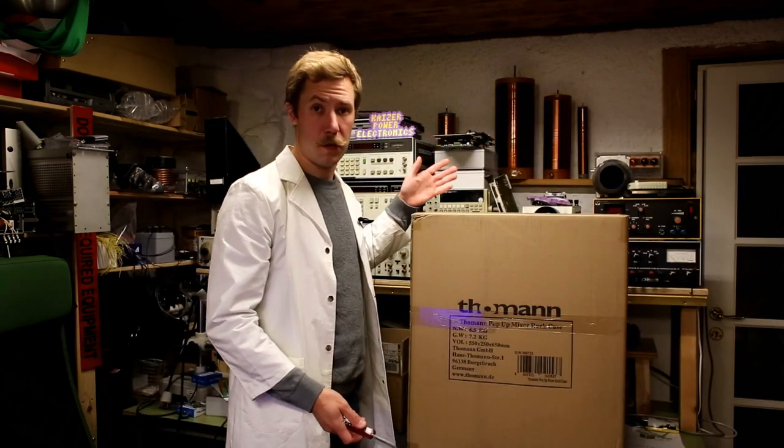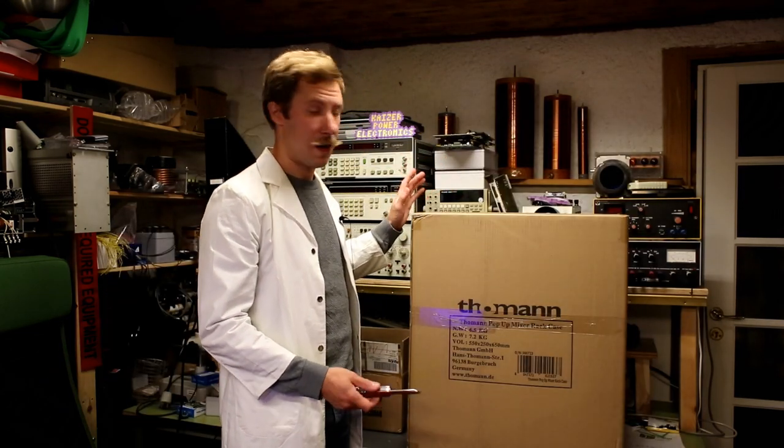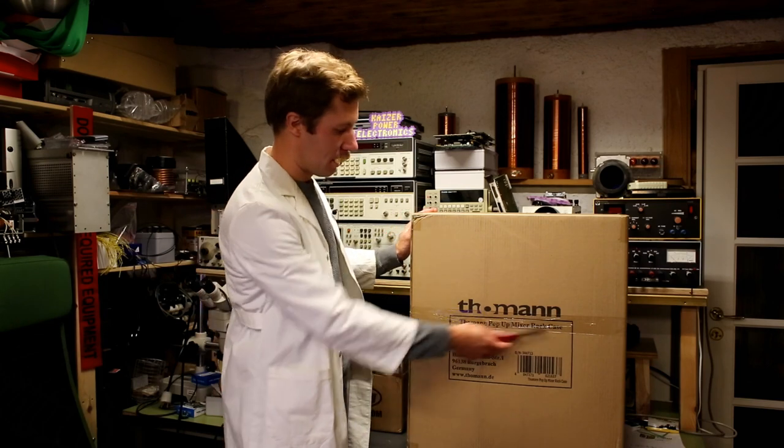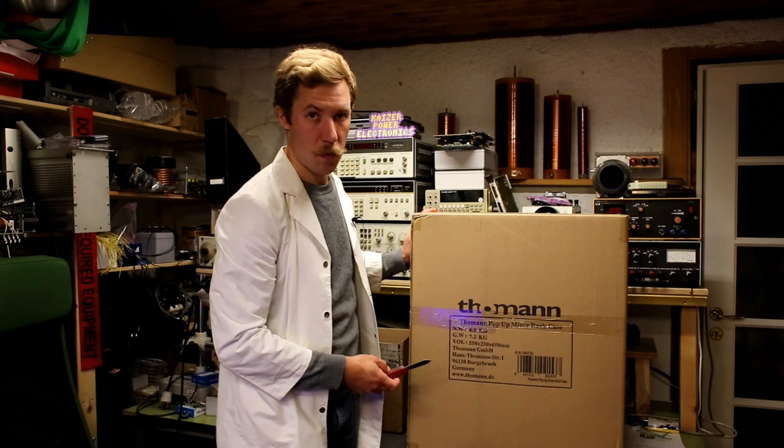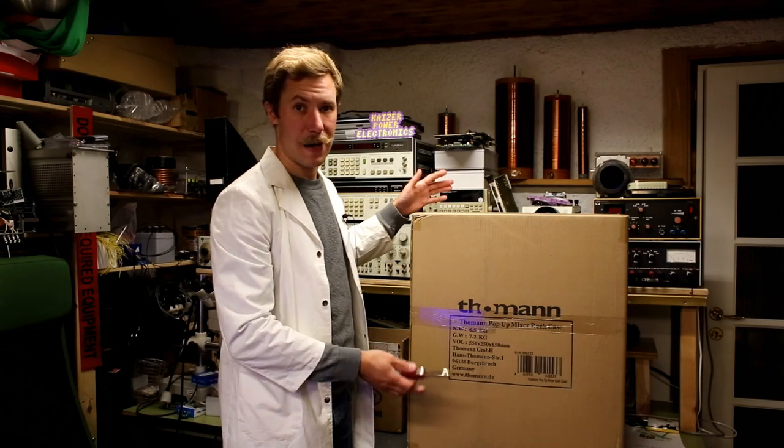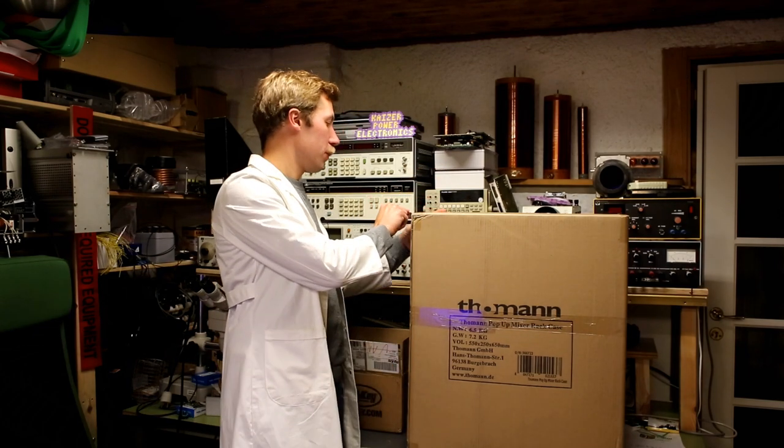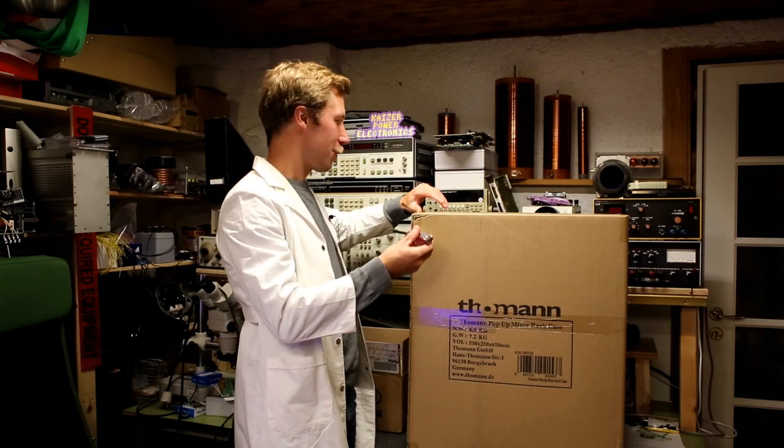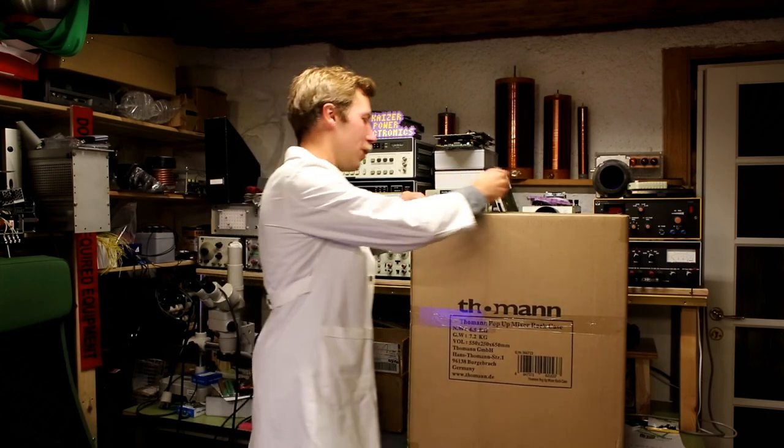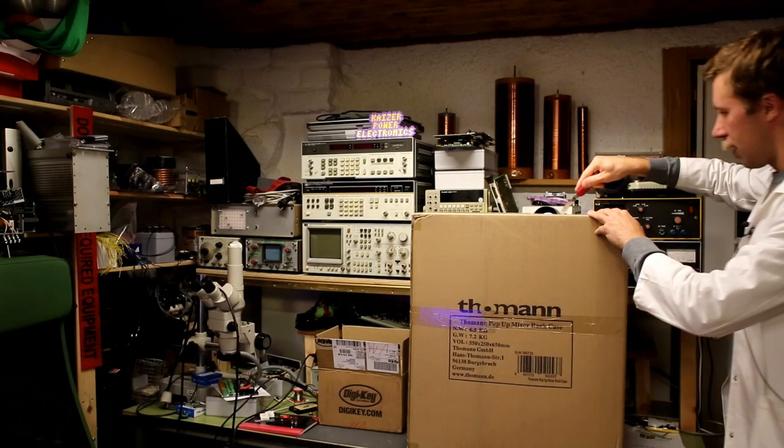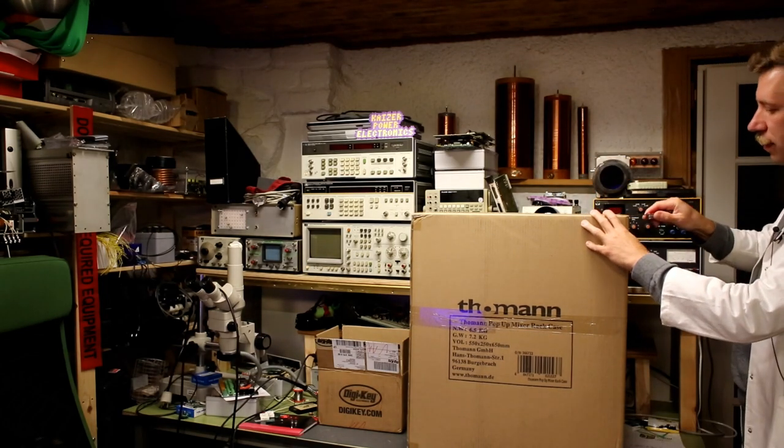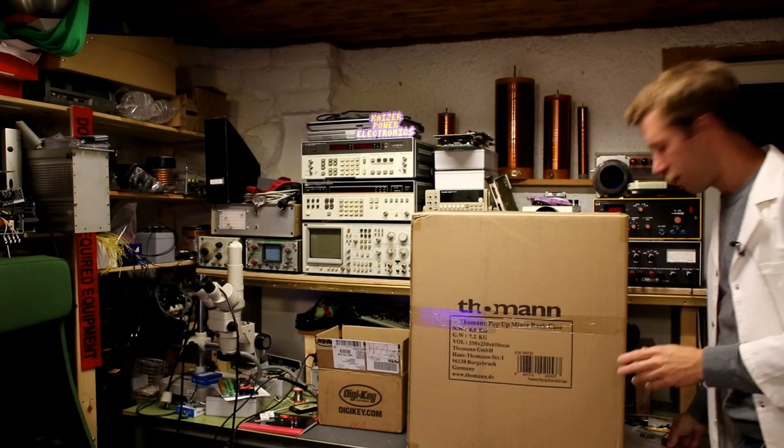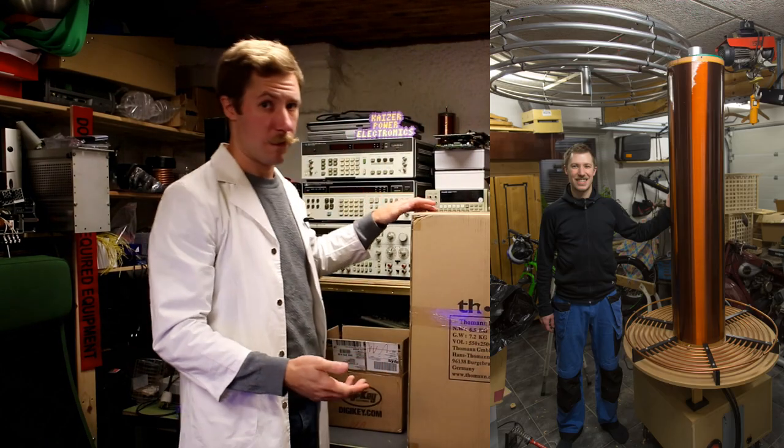For those of you watching this in full screen, high definition, you could probably read that this says pop-up mixer rack case. So this is a full 19-inch rack, 12-unit case. And it is a little bigger than I first imagined. That usually happens. Especially with building my large Tesla coil. I was kind of surprised if you build something that is 3 meters tall, that it is actually 3 meters tall.